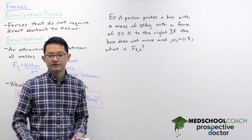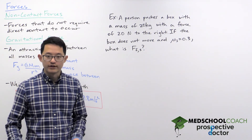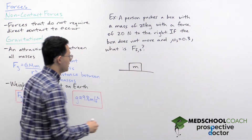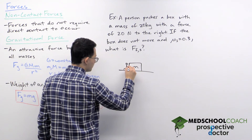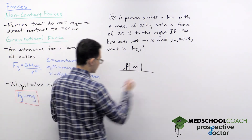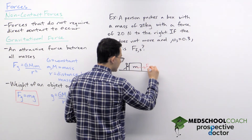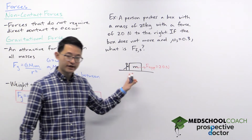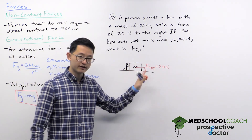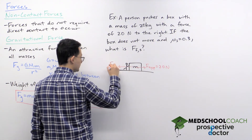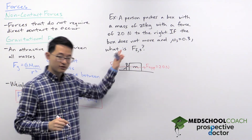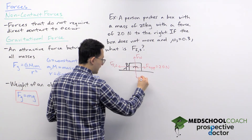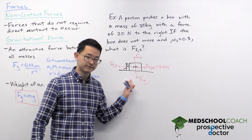In these types of problems, the best thing to do first is draw out the situation. We have a box with a mass of 20 kilograms, and a person exerting an applied force of 20 Newtons. In our free body diagram, we need to include all the forces: the applied force, the force of static friction (which is what we want to solve for), the normal force perpendicular to the surface, and the weight of the object — the force of gravity.